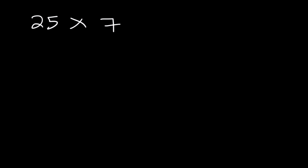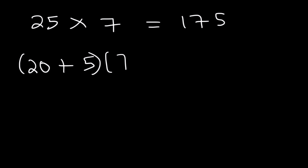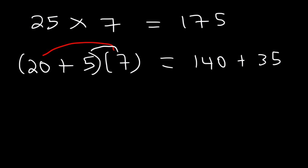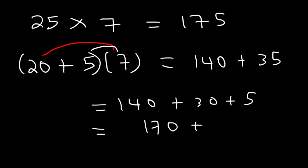Let's try another example. What is 25 times 7? Imagine 7 quarters — that's $1.75. So 25 times 7 is 175. To confirm: break 25 into 20 plus 5. 7 times 20 — seven $20 bills is $140, because 7 times 2 is 14, add the zero. 7 times 5 is 35. Then 140 plus 35: think of 35 as 30 plus 5. 140 plus 30 is 170, plus 5 is 175.